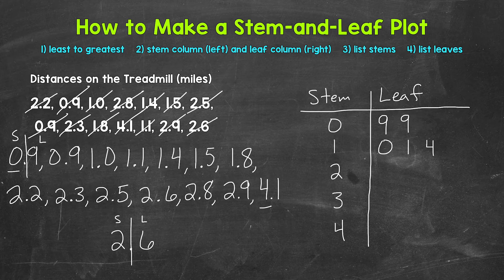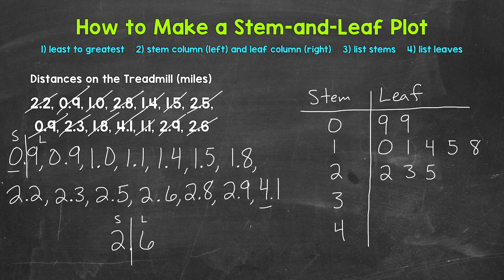Then 1.5, so a leaf of five. Then 1.8, so a leaf of eight. Now we move to 2.2 — moving down to the stem of two and we need a leaf of two. Then 2.3, leaf of three. Two point five, leaf of five. Two point six, leaf of six. Two point eight, leaf of eight. And then 2.9, leaf of nine.